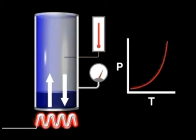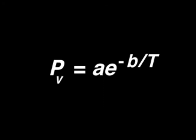The increase in vapor pressure with temperature is exponential. In this equation, A and B are constants that differ from one liquid to another. The absolute temperature is expressed in kelvins.